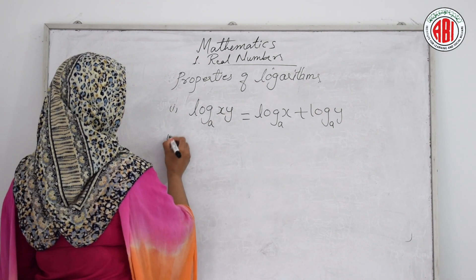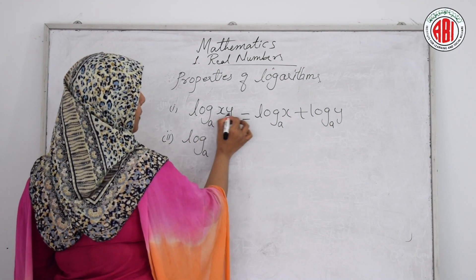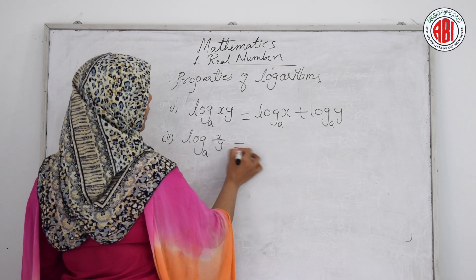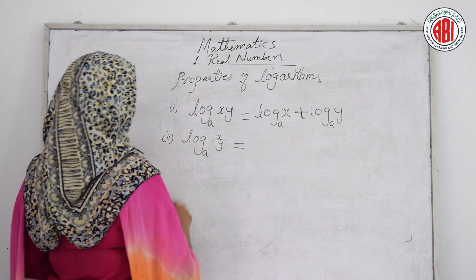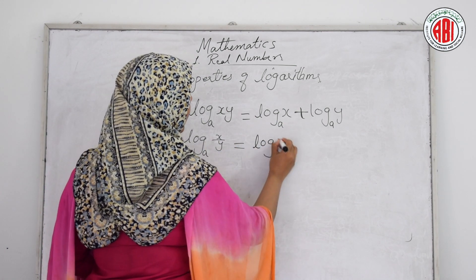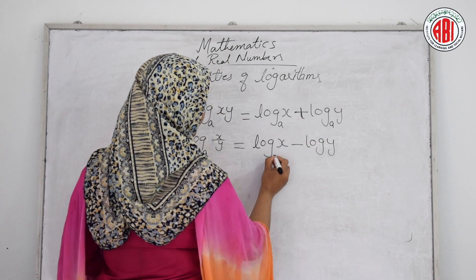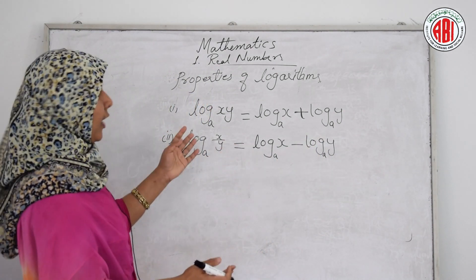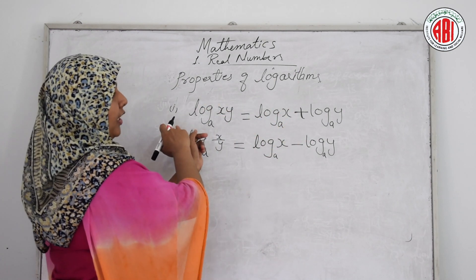The second property: log base a of (x divided by y). If it is in divide form, you write log x minus log y, same base. The base should be the same — if the bases are not the same, we cannot apply this. If the question comes in either form, you can convert between them.